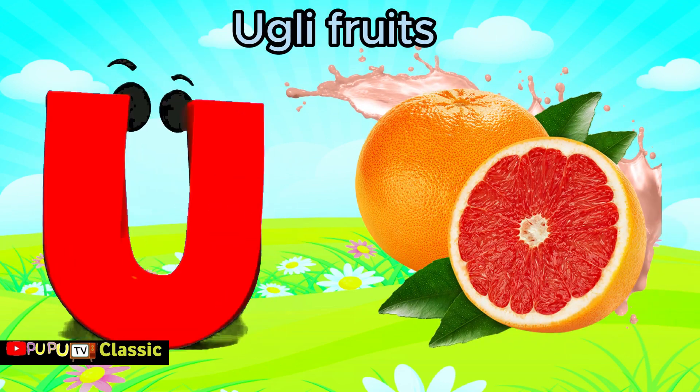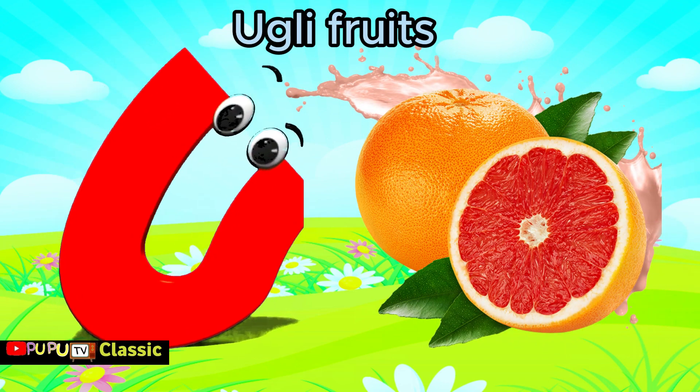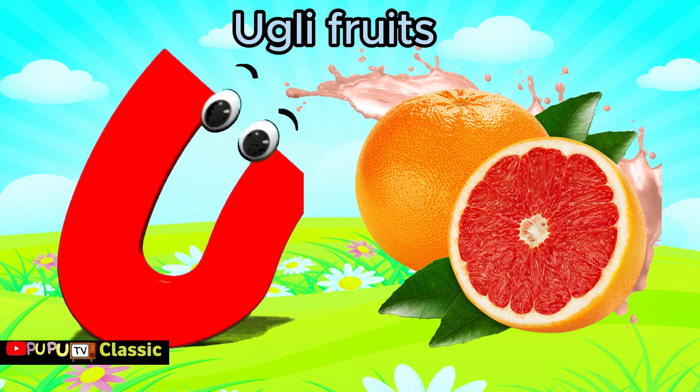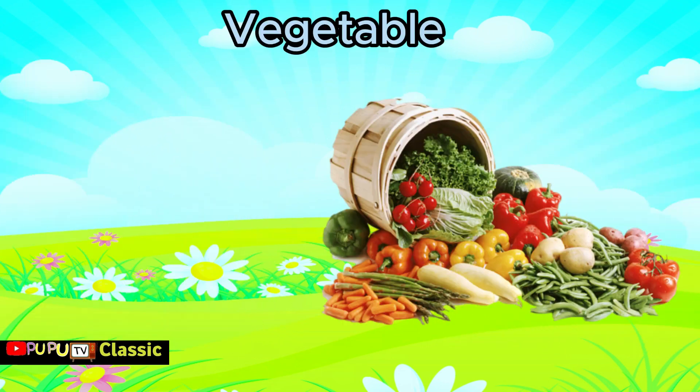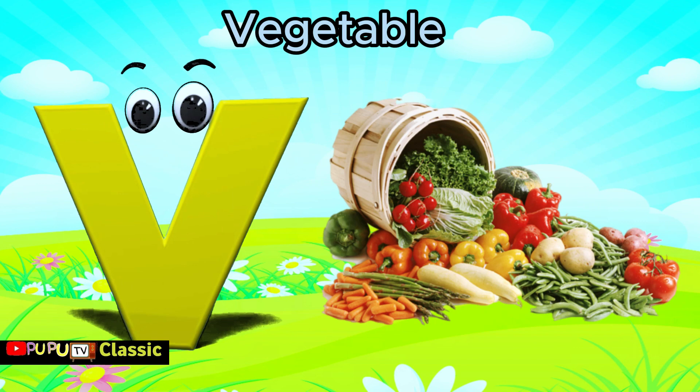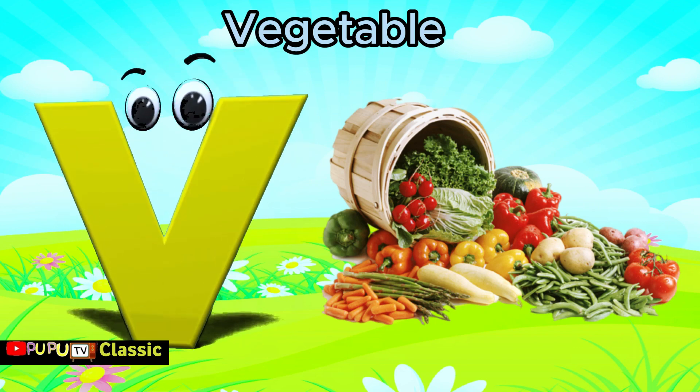U is for ugly fruit, uh, ugly fruit. V is for vegetables, v, vegetables.